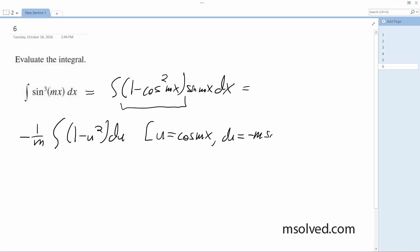Alright, so then we have negative 1 over m, u minus 1 third u cubed plus C, equals negative 1 over m cosine mx minus 1 third cosine cubed mx plus C.